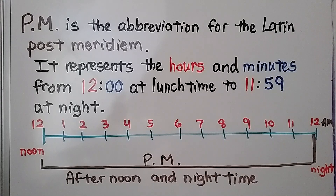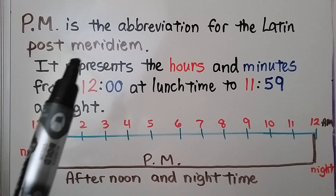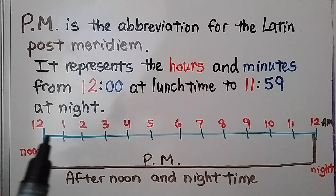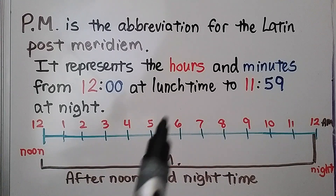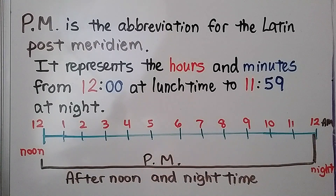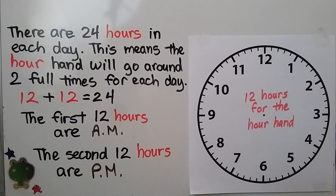P.M. is the abbreviation for the Latin 'post meridiem.' It represents the hours and minutes from 12 o'clock at lunchtime — that's noon — to 11:59 at night. We go from 12 o'clock noon when you eat lunch, to about dinner time in the evening, and then it's dark out, going to midnight at 12 A.M. So P.M. is afternoon and nighttime.